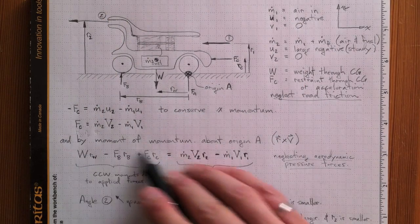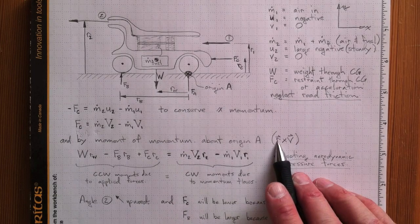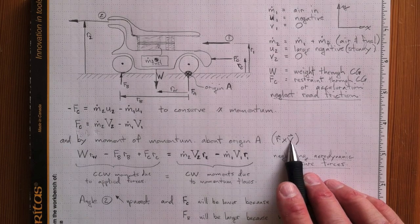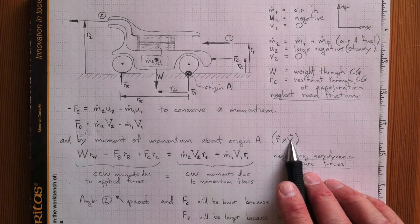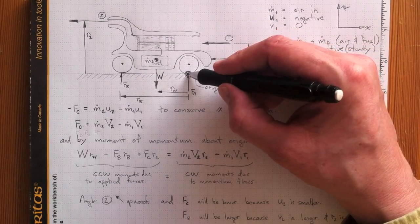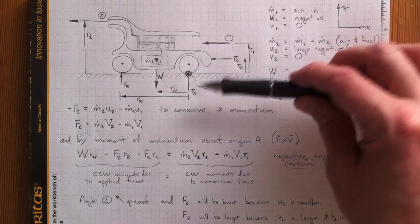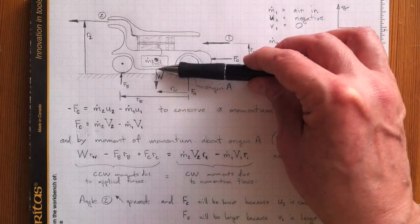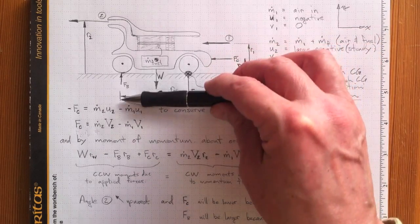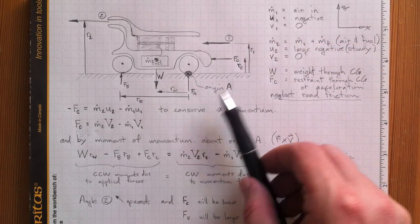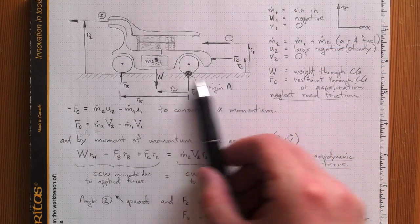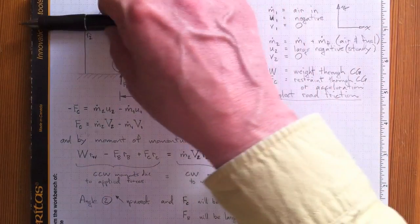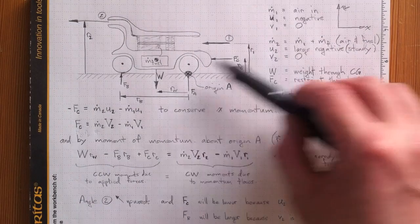So by the moment of momentum about A, and we're looking at the cross product of the radius vector and the velocity vector, which gets really complicated really quickly, but if we look at our origin point here, we can look at moments about that origin point, and all we're interested in is the distance perpendicular to the applied force if we're doing a moment balance based on forces. Likewise, we're interested in the distance perpendicular to the flow in or the flow out, so in this case R1 and R2.